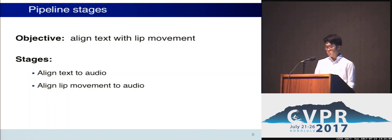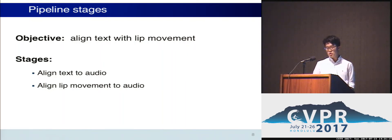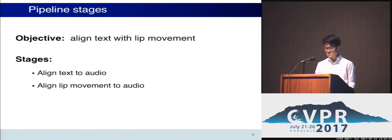To train the model, we need to align the lip movements with the text, and we do this in two stages: aligning the text to the audio, and aligning the video to the audio, also known as lip sync error correction. By doing these two things, we find the precise alignment between the lip movements and the words being said.